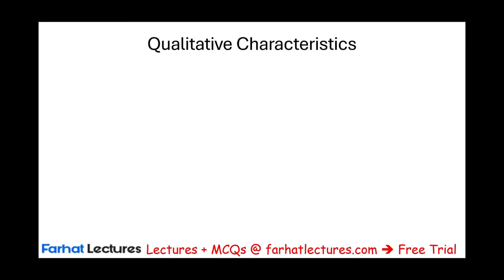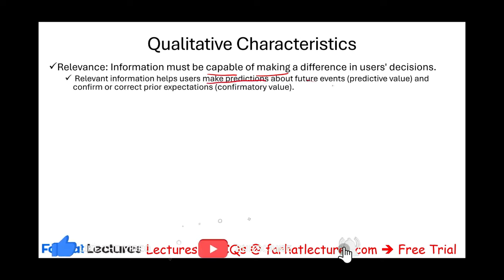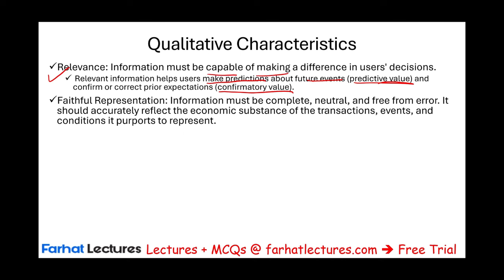What are some qualitative characteristics? When we provide information and write GAAP, the information has to be relevant. Relevant information is capable of making a difference in someone's decision. It helps users make predictions about future events — it has predictive value and confirmatory value, helping confirm what you thought prior. The other characteristic is faithful representation. The information must be complete — provide all the information. It must be neutral, not favoring any group. And it must be free from major error, meaning the information should be accurate, reflecting the economic substance of transactions and conditions of the organization.